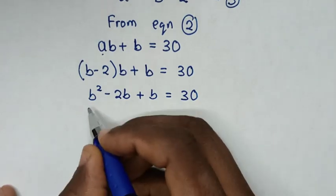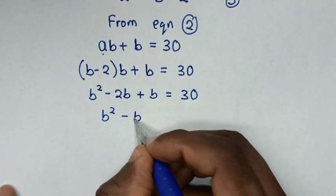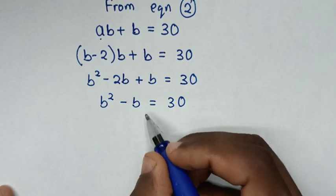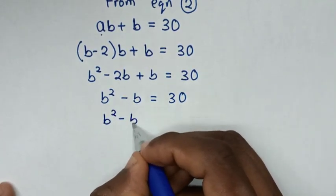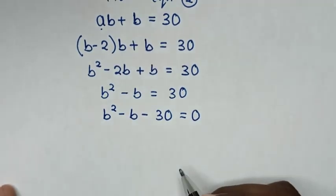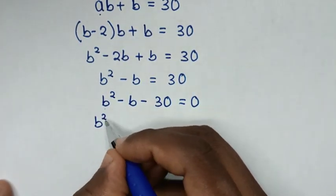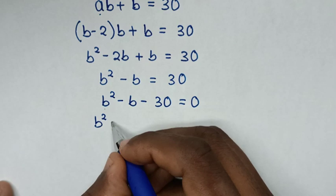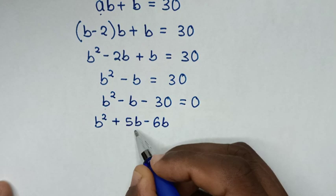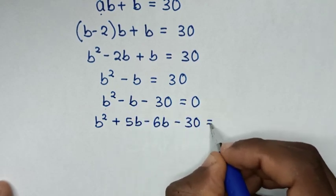Then it will be B squared — negative 2B plus B is negative B — so B squared minus B is equal to 30. Taking 30 to the left side, it will be B squared minus B minus 30 is equal to 0. Now we'll solve this quadratic equation by factorization. So negative B is the same as plus 5B minus 6B.